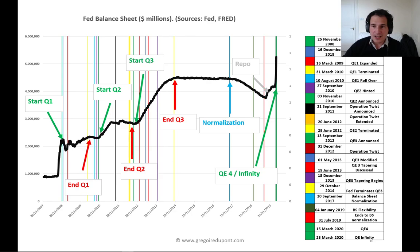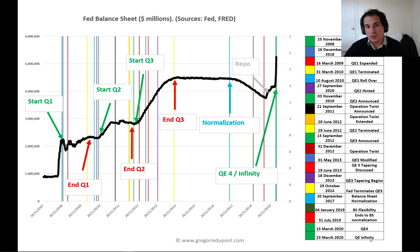Let's look quickly at the Fed balance sheet in millions of dollars. QE started in 2008 with the Great Financial Crisis — QE1 started in November 2008 and terminated in March 2010. QE2 restarted at the end of 2010 because the economy was still pretty weak, and ended in 2012. In September 2013, we had a third wave with QE3, which ended at the end of 2014.